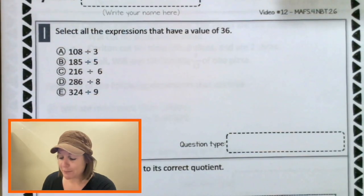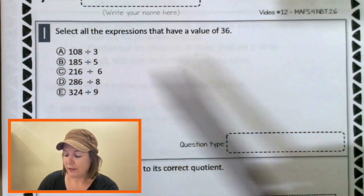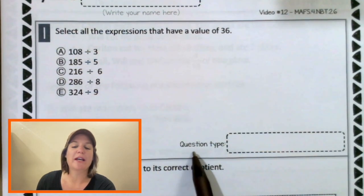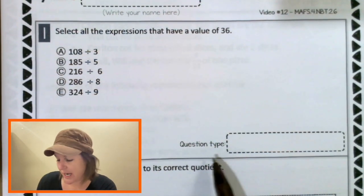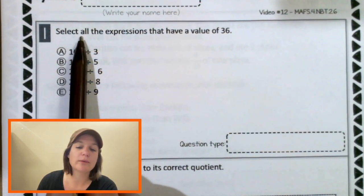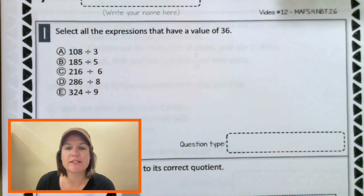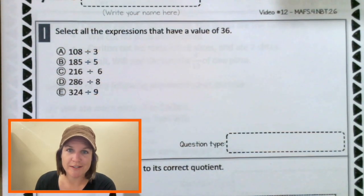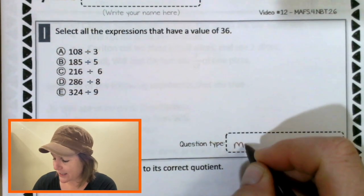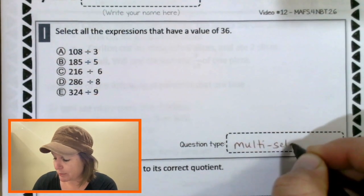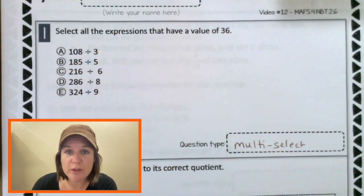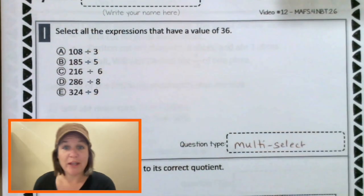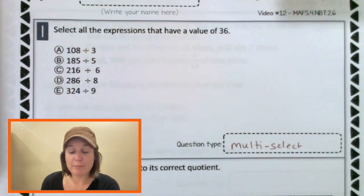All right, everybody, welcome back. Let's break down number one. You know how we do it. First, we take a look at the question type. I'm looking at select all real quick. I see five answer choices here. So what kind of question is this? It's a multi-select. That means that there's a very good possibility that there will be more than one correct answer.